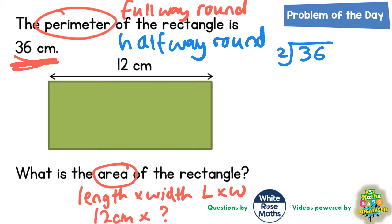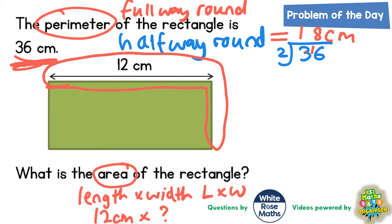But if we can't we could just do a quick bus shelter. So 2s into 3 goes once remain a 1 and 2s into 16 goes 8 times. So if the full way round is 36 then half way round must be 18 centimeters. And basically half way round is 1 of the lengths plus 1 of the widths. So if 1 of the lengths is 12 then to get it up to half way round 18 the width must be 6.